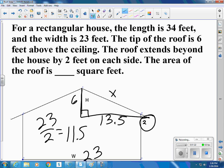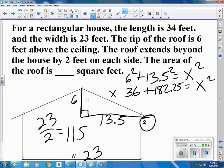So to find this length, we know that 6 squared plus 13.5 squared is equal to the hypotenuse squared. 6 squared is 36. 13.5 squared is 182.25. So 218.25.